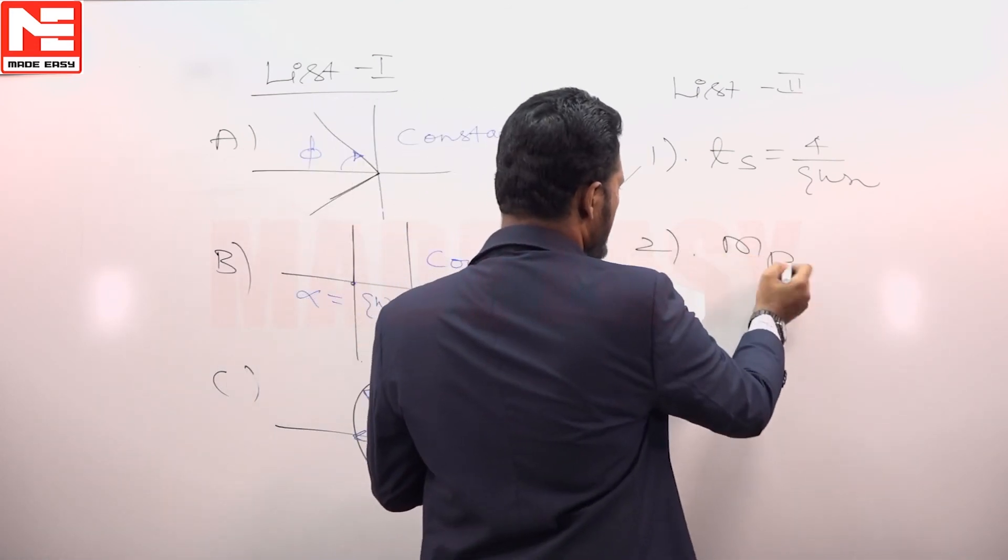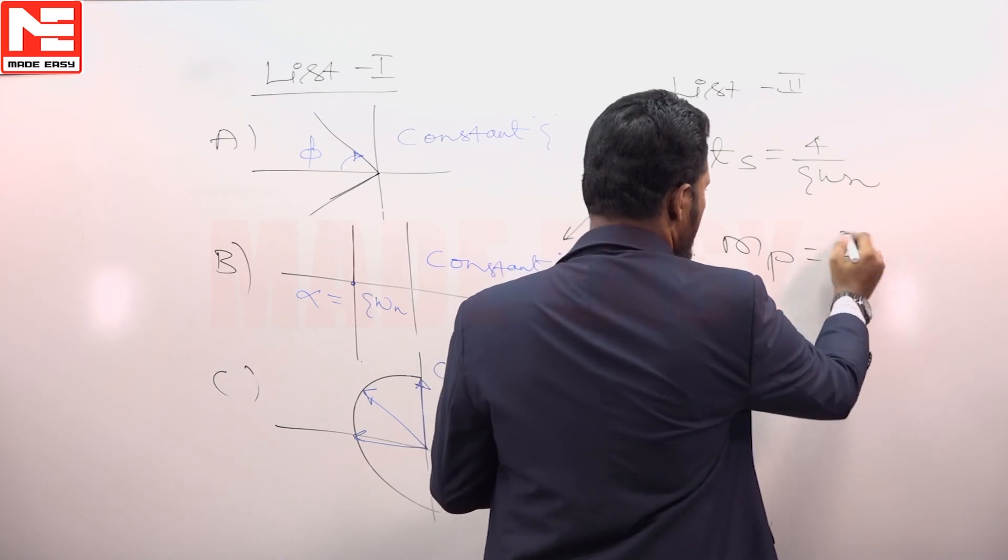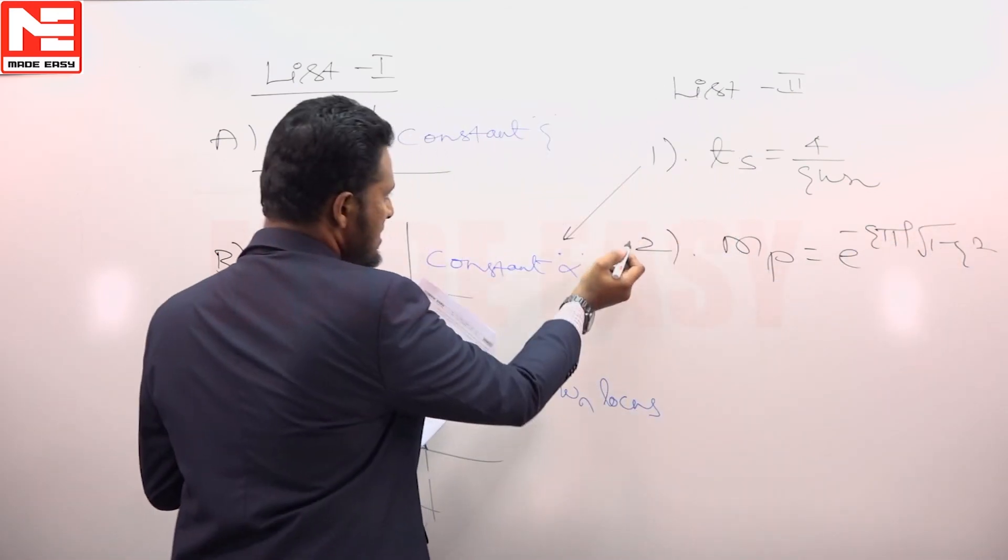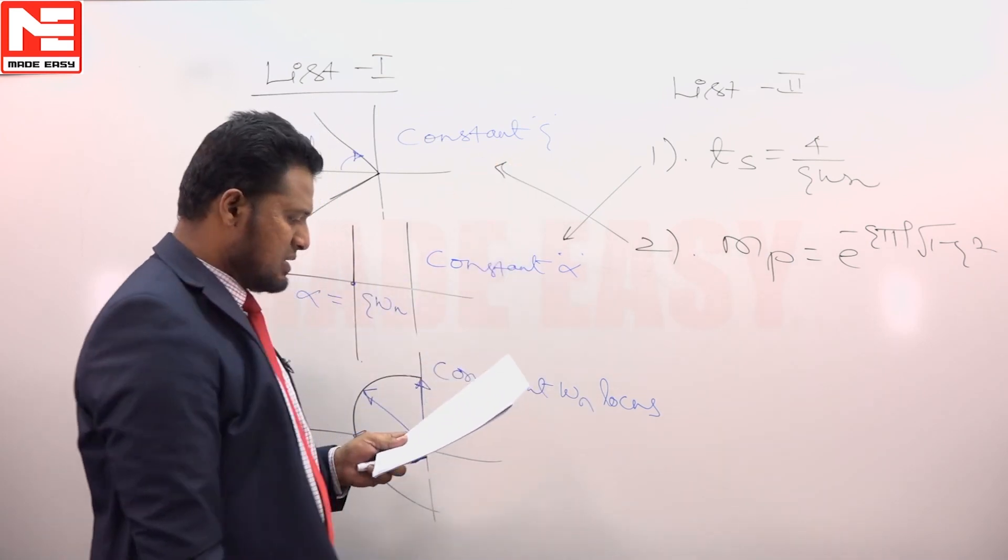Second, same MP. MP is e to the power minus zeta pi by root 1 minus zeta square. Same MP is possible using same zeta.